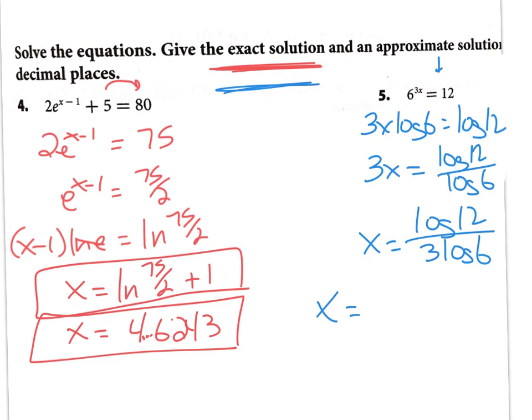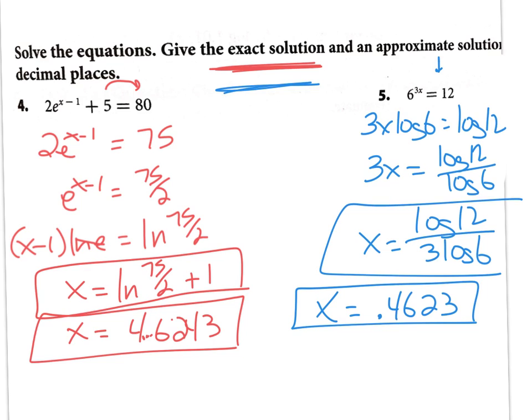Once I start my calculator I have given up my exact solution for decimals. Punch it in now, log 12 close that parentheses divided by open for the whole bottom three times log 6. I'm closing the whole bottom in one parentheses and it gave me 0.4623. There's my decimal answer, there's my exact answer.